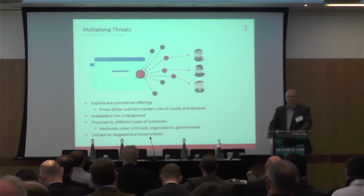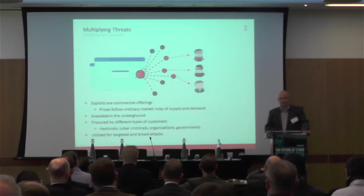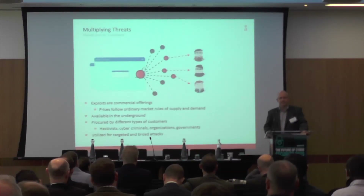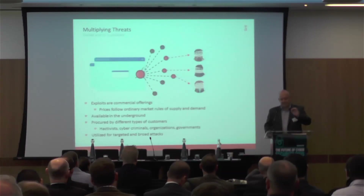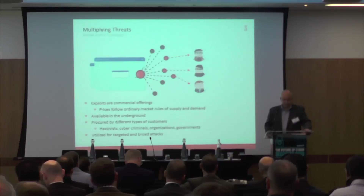You can go and buy exploit kits on the dark web. You can buy software that turns on somebody's webcam when they don't realize it, or does seemingly trivial things used to gather information about organizations and steal sensitive data. These things are sold and commercially available - a few hundred pounds or less in some cases. They're used by activists, cyber criminals, and in some cases governments.